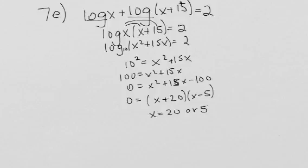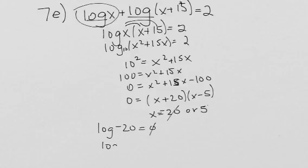If I take the negative 20 and plug it back in, I cannot do log of negative 20 because that's undefined. So that's not going to work, but I can do log of 5. So in this case we know that the only true solution is x equals 5.